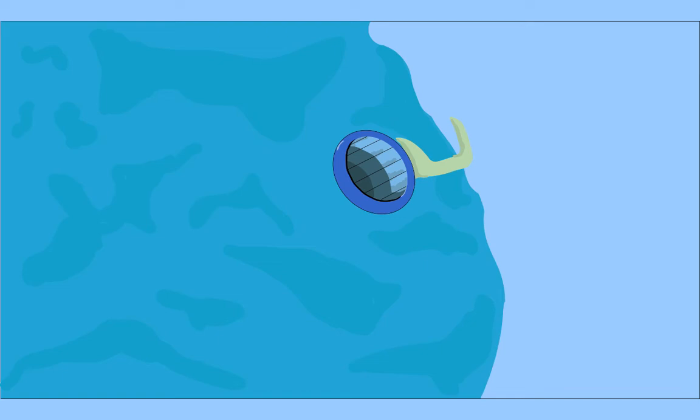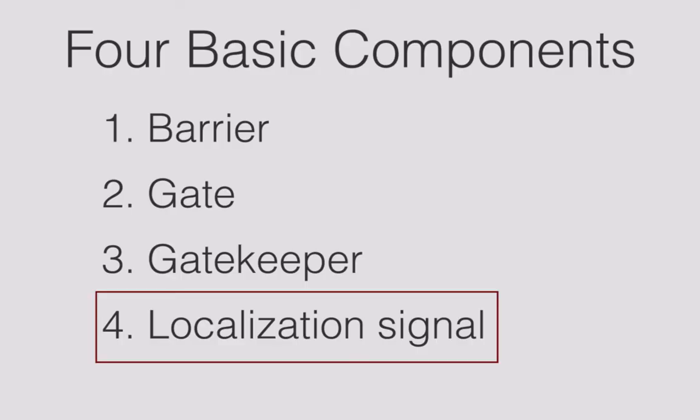But there also needs to be a way for very specific proteins to be bound by gatekeepers. This brings us to the fourth component of protein transport, the localization signal.